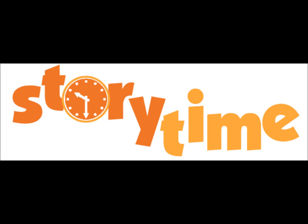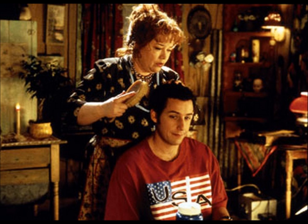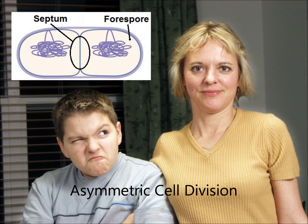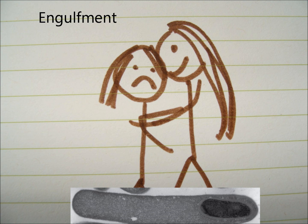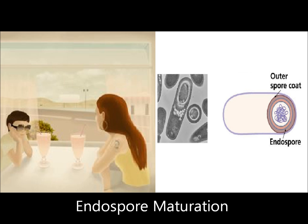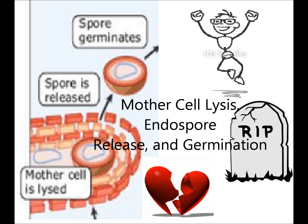In order to better understand the process of sporulation, correlate it to the following story. There is a mom and a mama's boy. As the boy grows older, he distances himself from his mom by putting up an emotional barrier. In order to rekindle the lost connection, she engulfs him with love. His emotional barrier eventually becomes so strong that he breaks away and she dies of a broken heart. The son goes on to live his life.